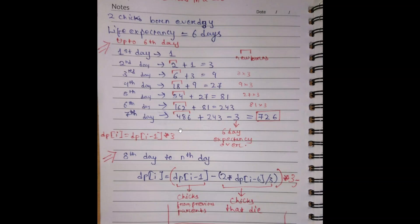From the seventh day onwards, chicks will keep dying. You can see a pattern from day one to six: it's 1, 3, 9, 27, 81, 243 — multiples of three. So our DP formula for the current day up to six days is: number of chicks on the current day equals the number of chicks on the previous day multiplied by three.